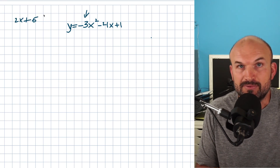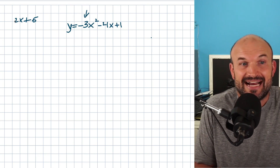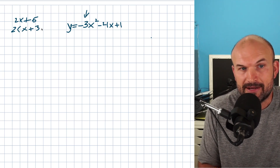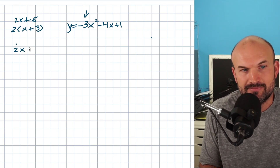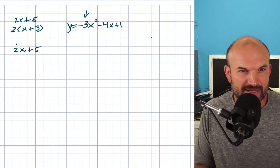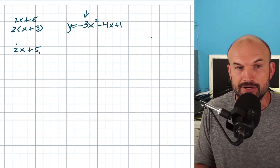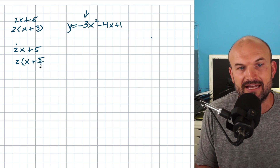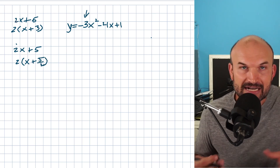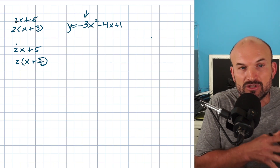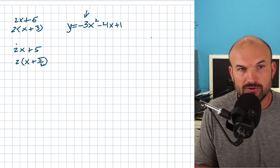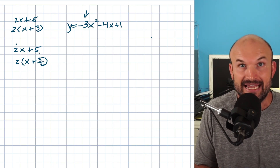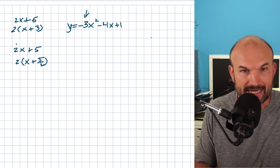Let's do a quick review. If I want to factor out a two from 2x plus 6, factoring out a two is basically dividing — it leaves x plus 3. But what about 2x plus 5? A lot of students get confused because 5 is not divisible by two, but you can still factor out the two — you'd be left with two times the quantity x plus five halves. This works because of the distributive property; factoring is just reverse distribution. Two times x is 2x, and two times five halves is five.